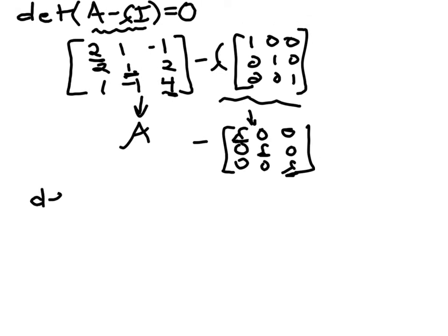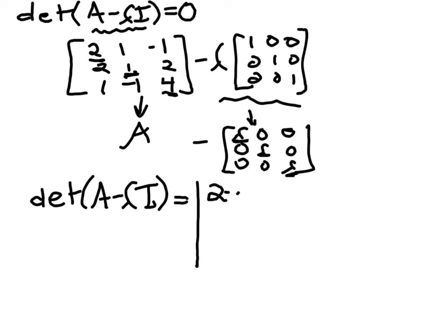Let me start out writing the determinant. So the determinant of A minus lambda I equals the determinant of this matrix where we subtract lambda from the diagonal entries. So 2 minus lambda, and then the rest of column 1 is unchanged. In column 2, we have 1 and then 1 minus lambda on the diagonal entry, and the last entry is unchanged. In the last column, negative 1 and 2 are unchanged, but we subtract lambda along the main diagonal.